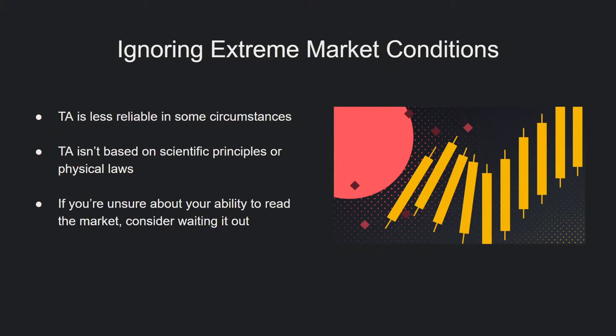The fifth mistake is ignoring extreme market conditions. There are times when technical analysis becomes less reliable — usually around black swan events or other liquidity events where the usual rules don't really apply. These times can correlate with extreme readings on indicators and unreasonable moves both to the upside and downside, and TA can essentially be thrown out the window. In such conditions, probably the best thing to do is absolutely nothing. If the markets are hard to read, your usual risk framework is out the window too, so you need to identify what's happening and decide whether it makes sense to trade.